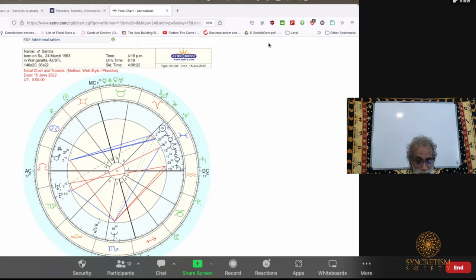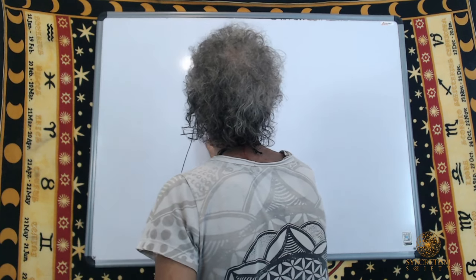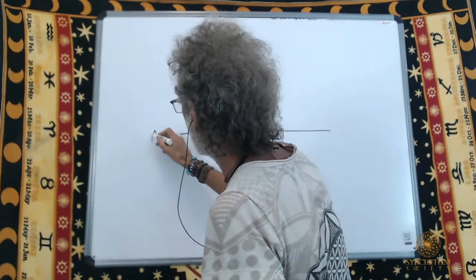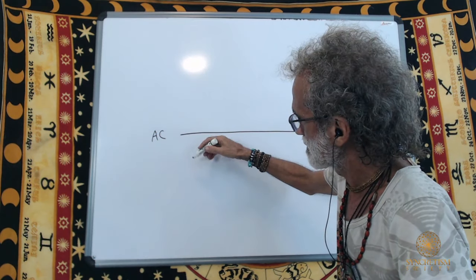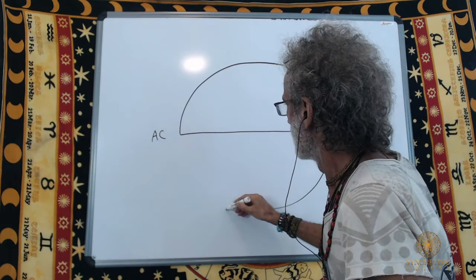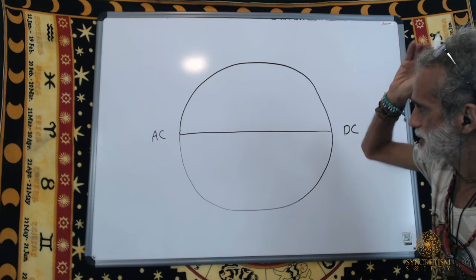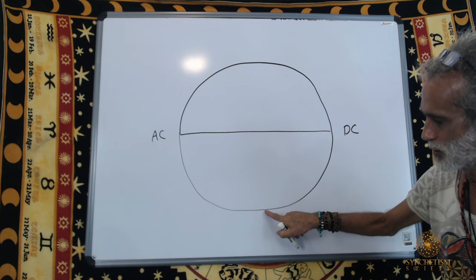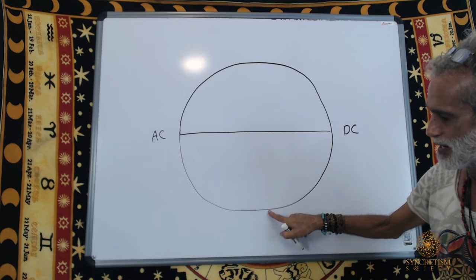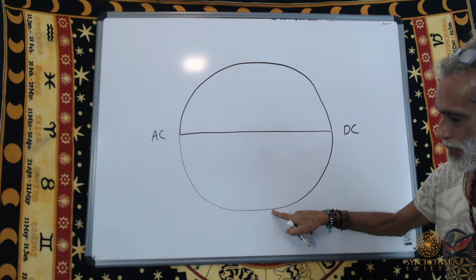Let's go to my board. AC is over here, DC is over here. The circle I said divides the signs from the houses — that is the ecliptic. This is the ecliptic, and that is the beginning of astrology. This is where you begin your journey. Always understand that this is the ecliptic. What is the ecliptic? The ecliptic is the path, the trajectory of the Sun. All of the other planets also follow the ecliptic, but they're not always on the ecliptic.